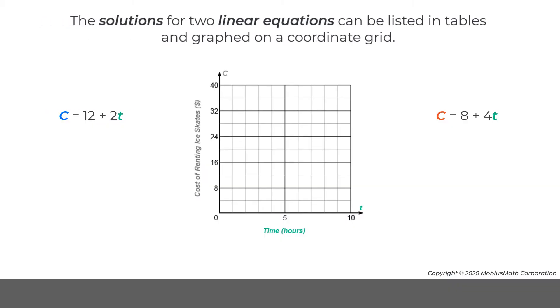The solutions for two linear equations can be listed in tables and graphed on a coordinate grid. For example, the ice skating rink at the park has two shops where ice skates can be rented.